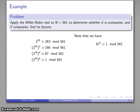I'll rearrange that a little bit. This is 67 squared minus 1 is 0 mod 561, which tells me that 67 squared minus 1 factors as a sum and difference, 66 times 68.